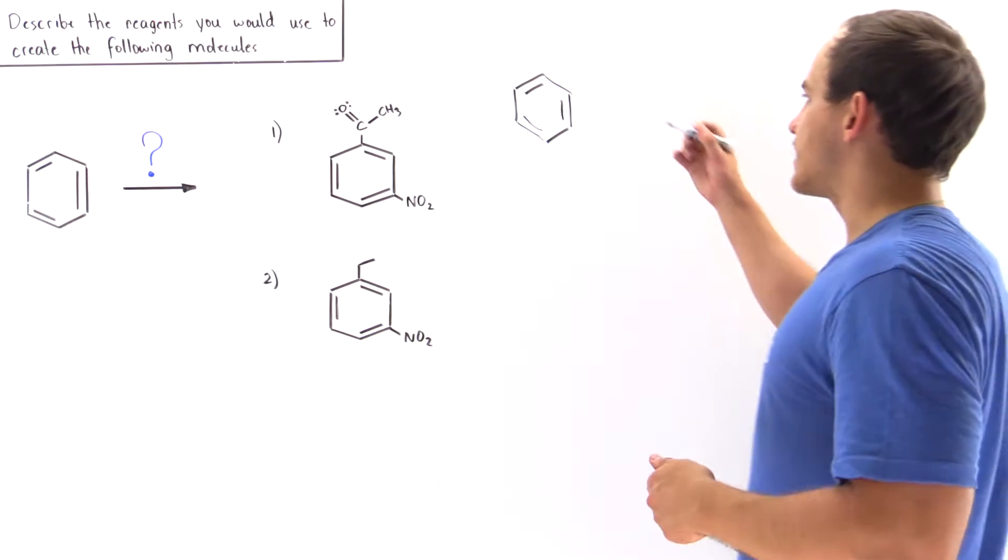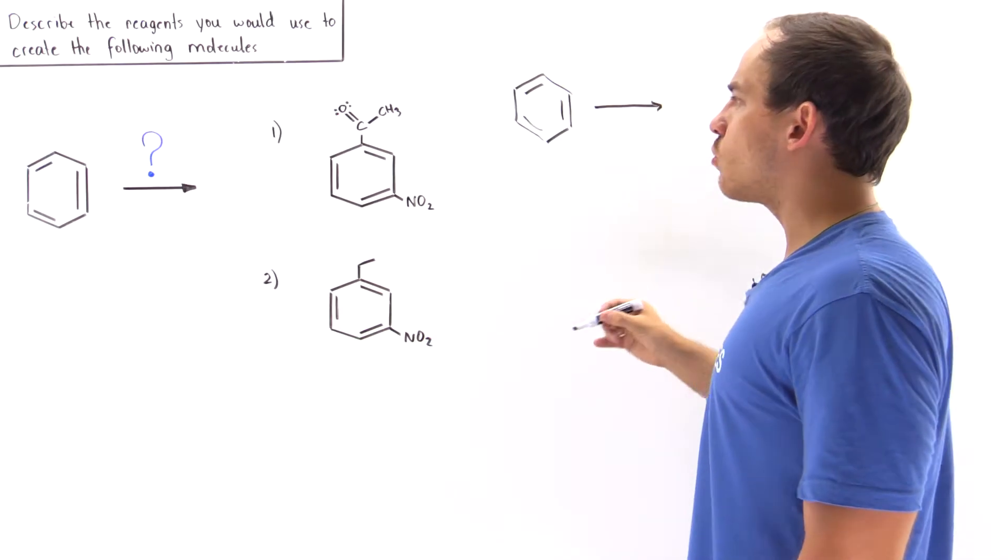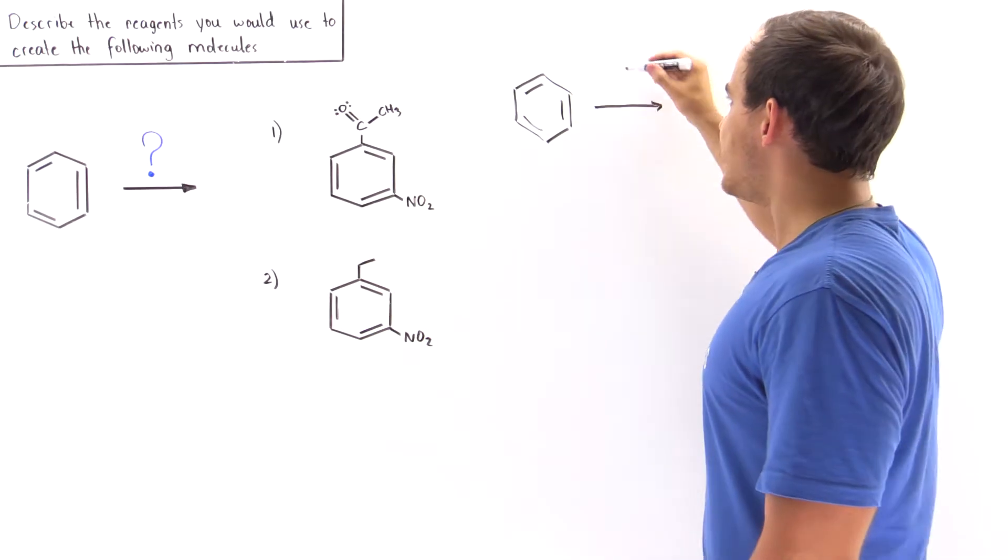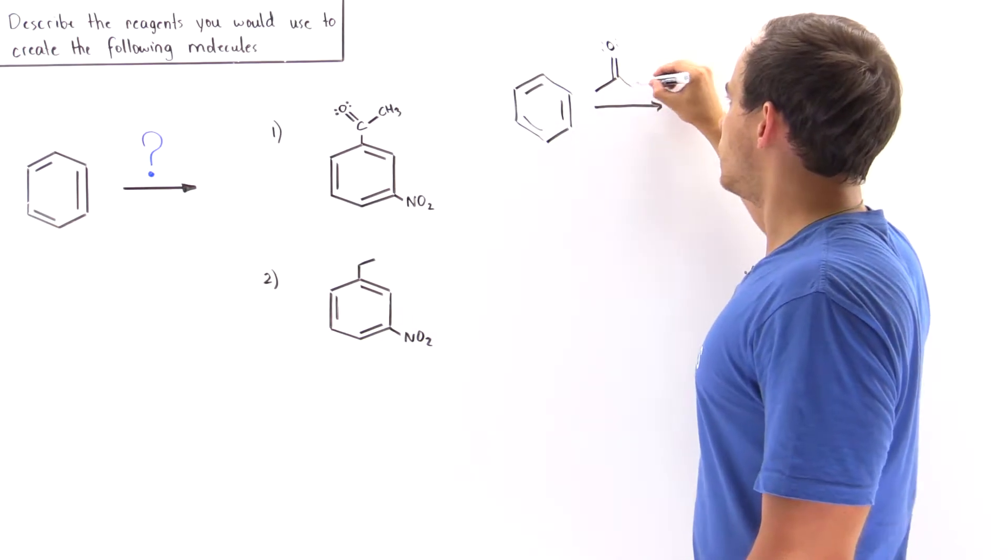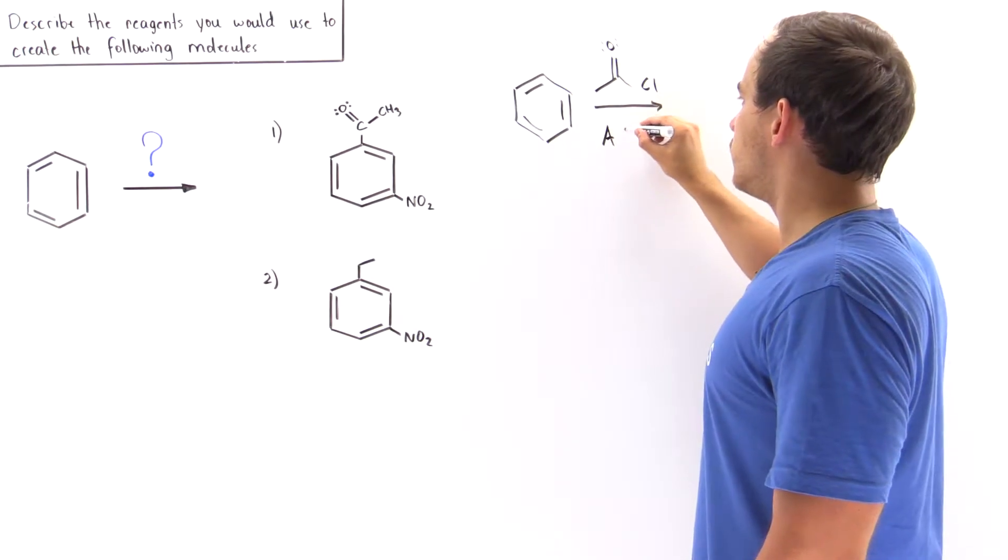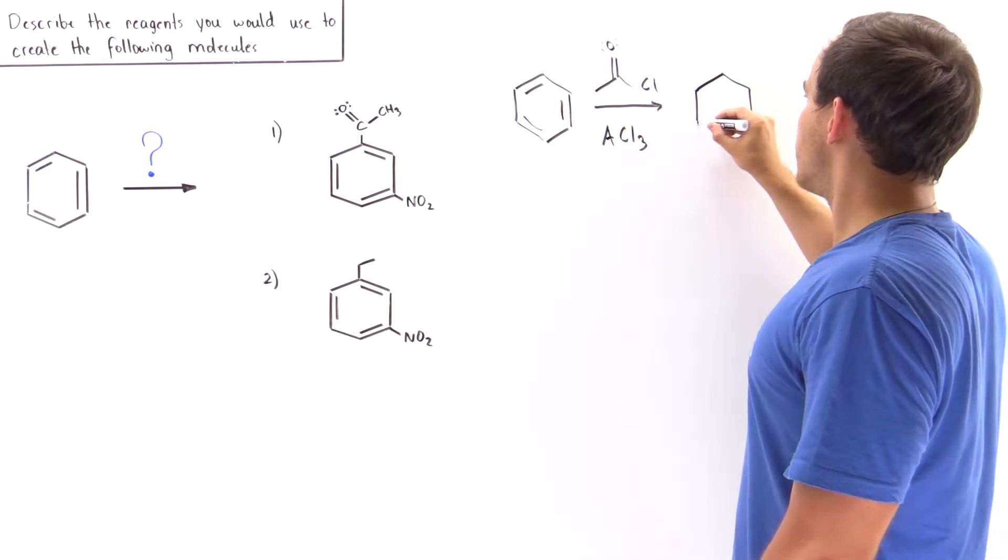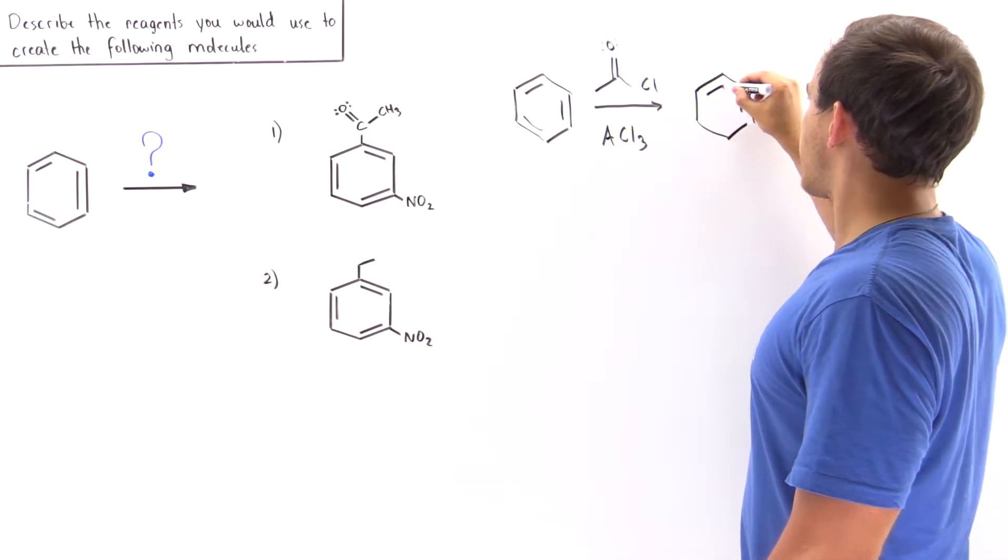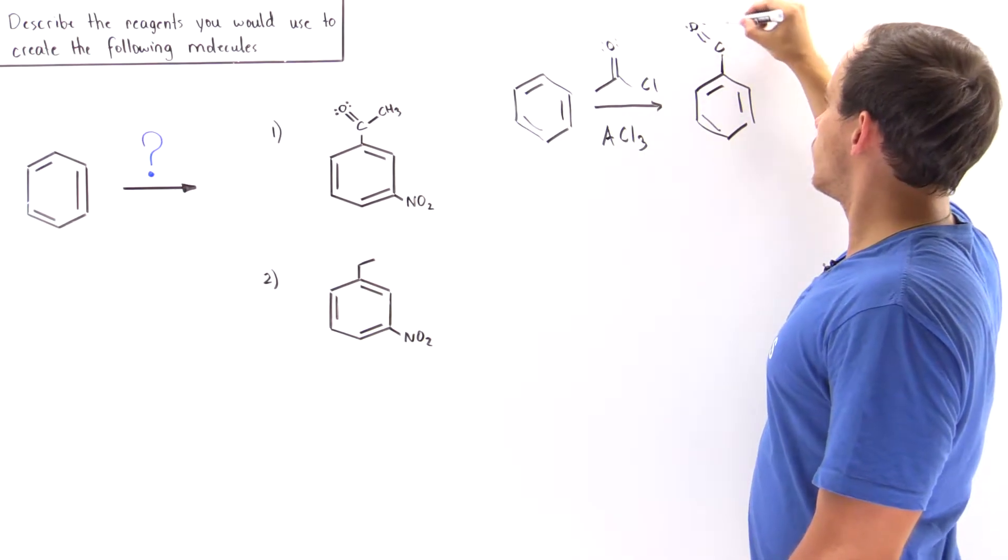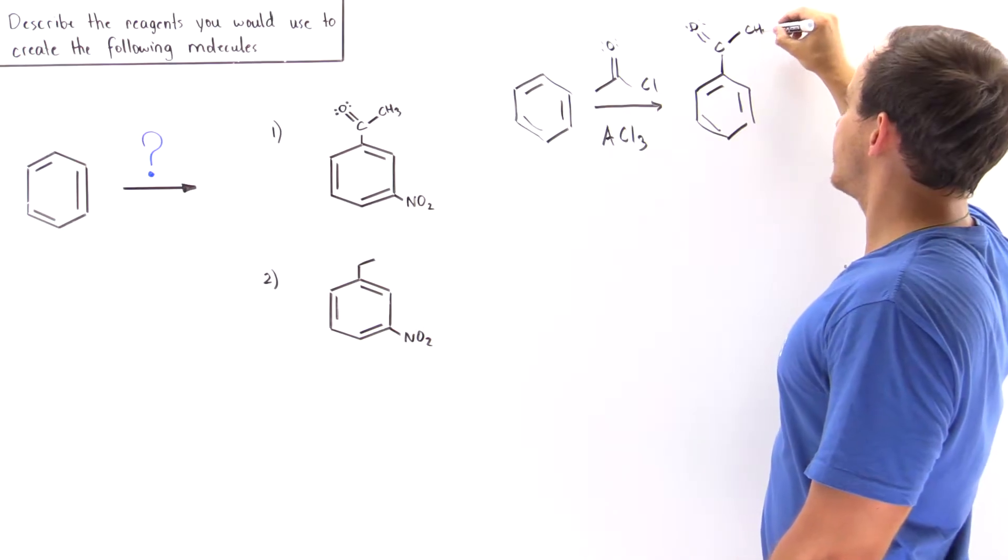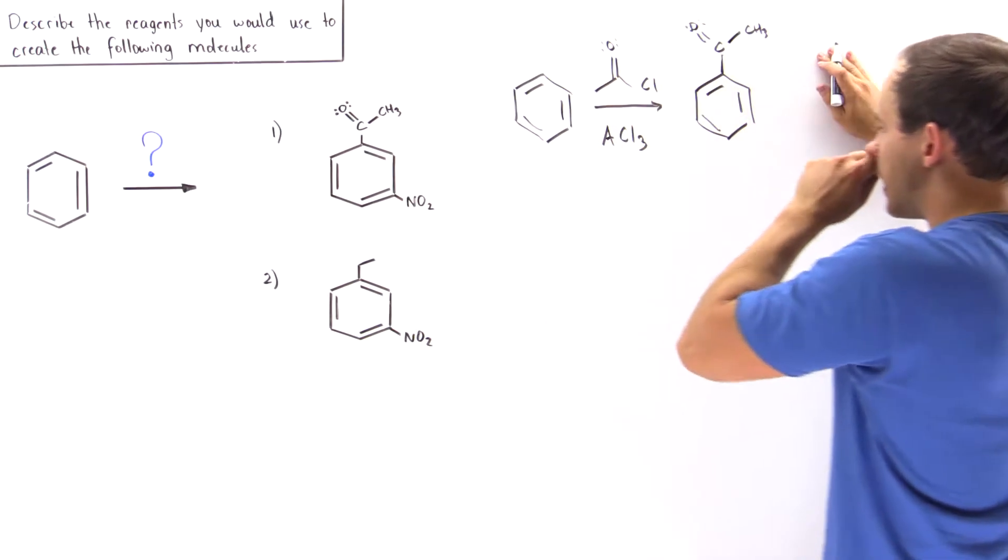Now if on the other hand we take the benzene and allow it to undergo the Friedel-Craft acylation, so we react this molecule in the presence of aluminum chloride, we form the following product. We form exactly what we want to form—we place this group onto our benzene.